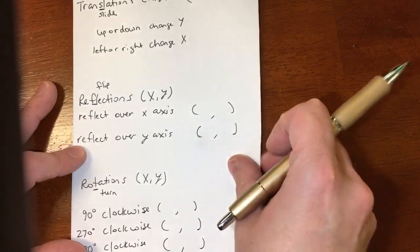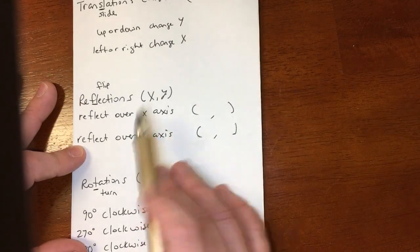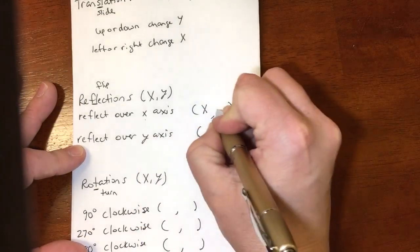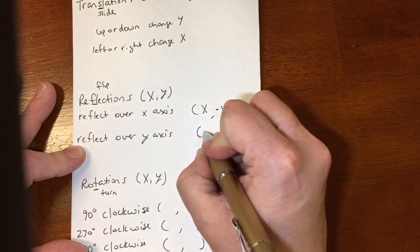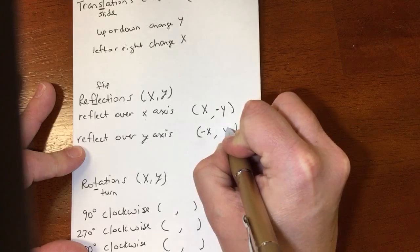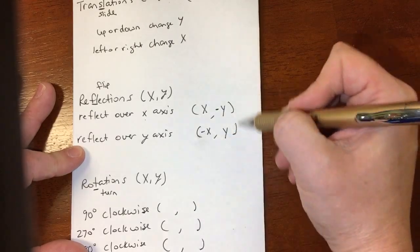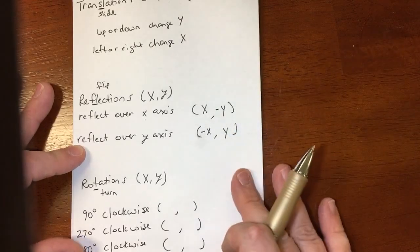The reflections - we have the reflection over the X-axis, where the X stays the same and the Y turns opposite. And over the Y-axis, where the X turns opposite and the Y stays the same. So this is how my reflections look algebraically.